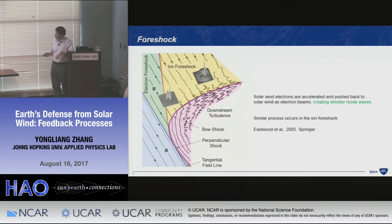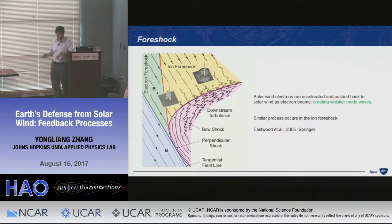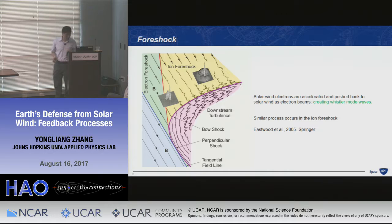An important feature is that there's an electron beam going back to the solar wind at the electron foreshock, because the solar wind comes toward Earth and interacts with the bow shock, causing acceleration so the beam goes back. Those beams are unstable to whistler waves, and indeed we see lots of whistler waves generated from the beam — that's the evidence we observe.